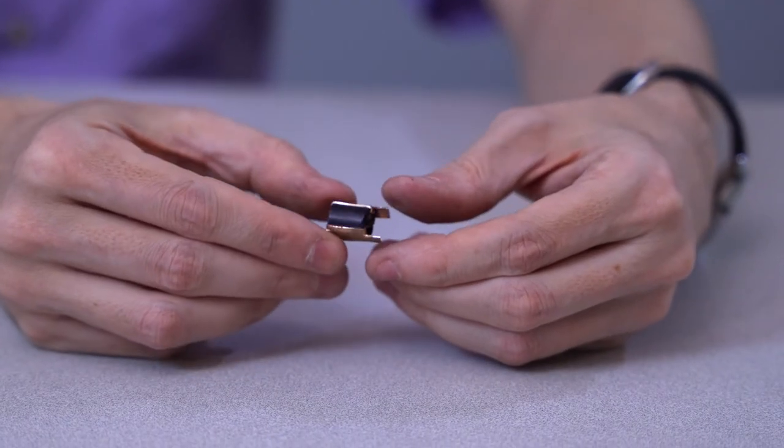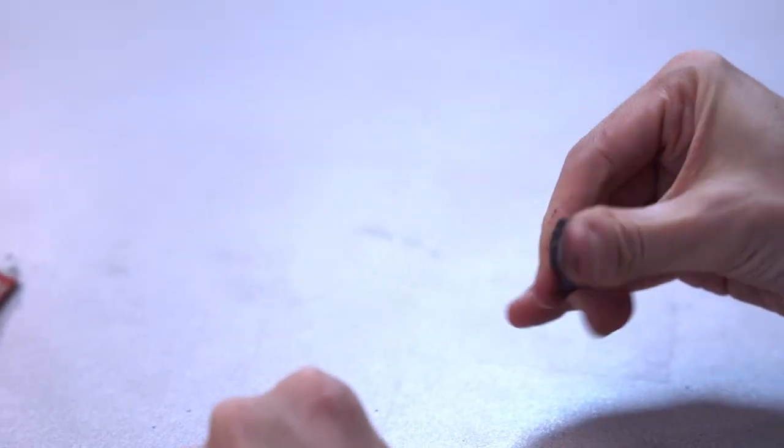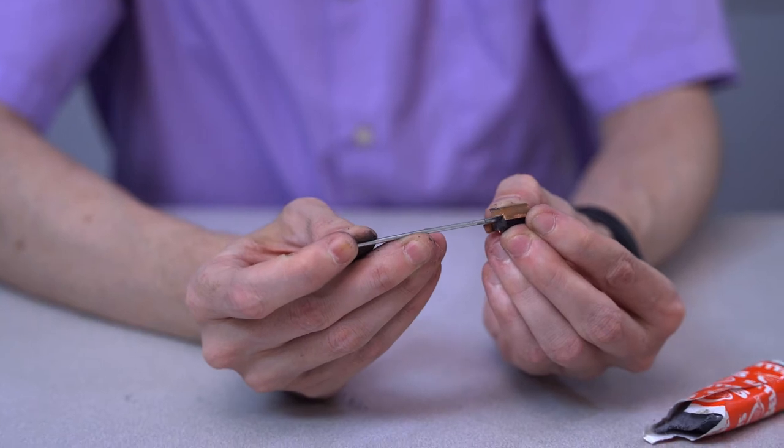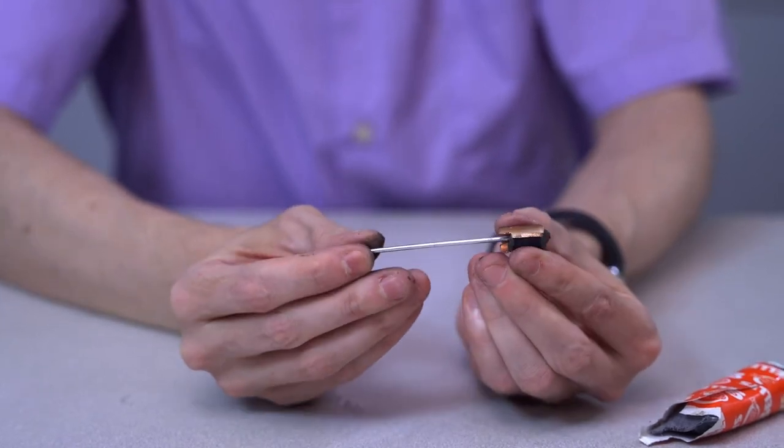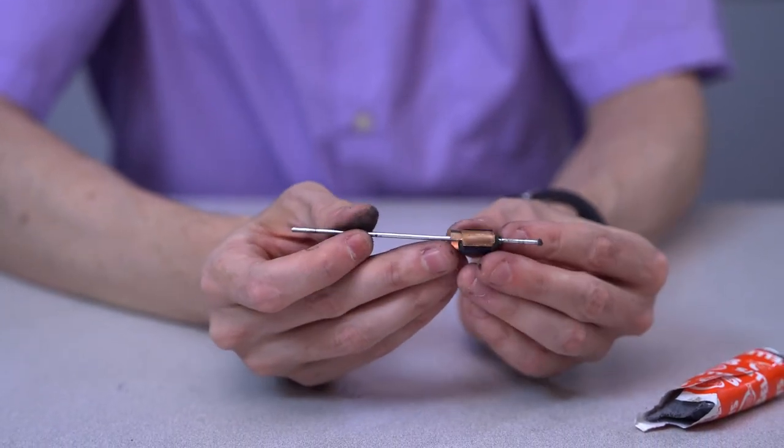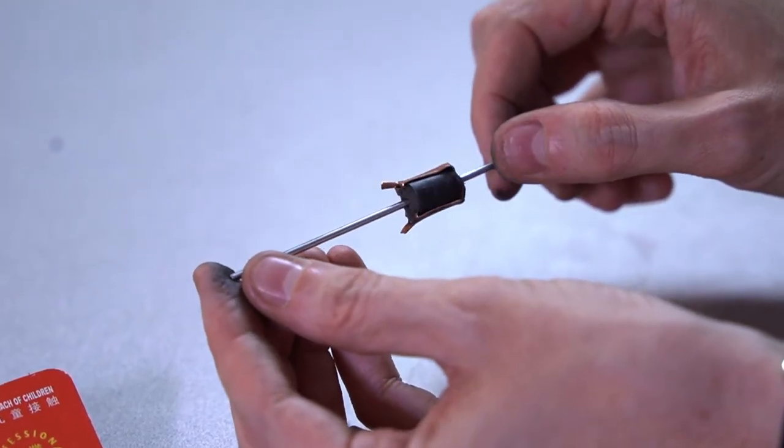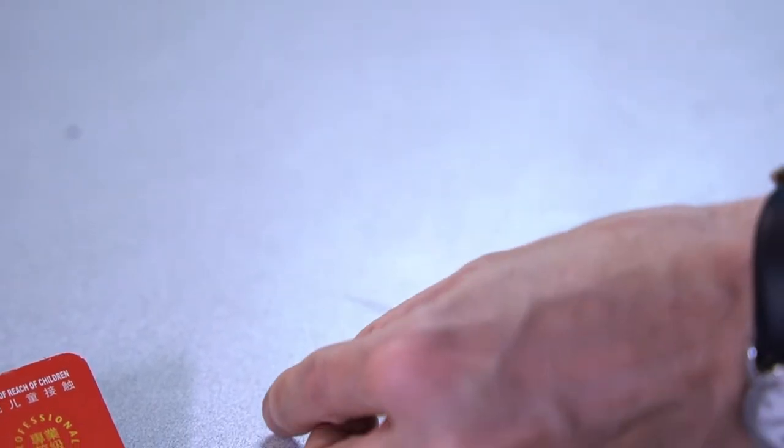Once we get both of the copper strips attached, we can mix up a bit of epoxy putty and stuff it into the plastic tube. Then we can run the shaft through the middle of the putty. We're going to want the center of the tube to be about 27 millimeters from the end of the shaft. Now we've finished making the commutator and we can let the epoxy dry.